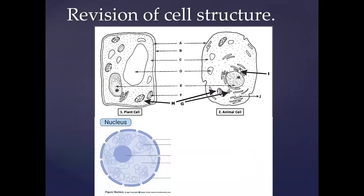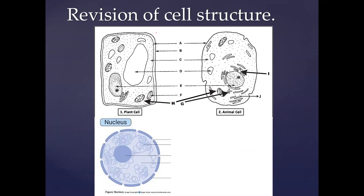Some revision from previous grades — it's important that we understand cell structure and know a little bit about some of the organelles we will mention. One of the important parts of the cell we should know is structure C, the background of the cell known as the cytoplasm. It's made up of cytosol. We will also mention the mitochondria.